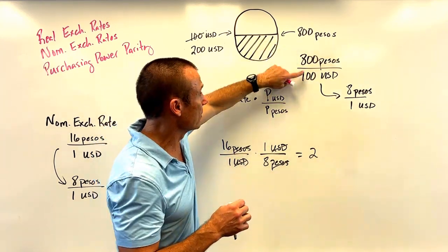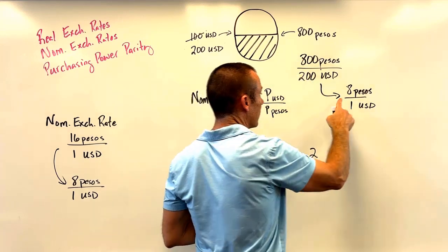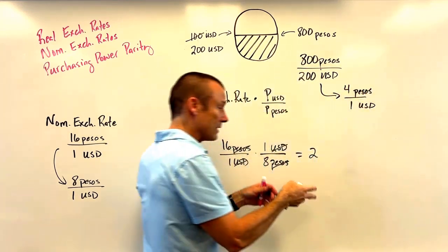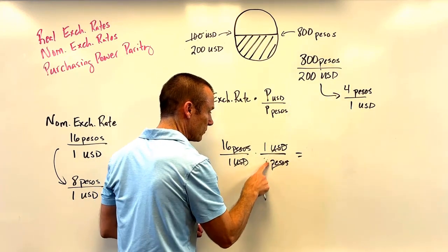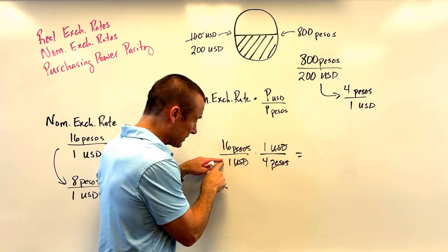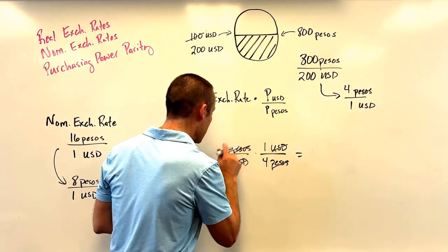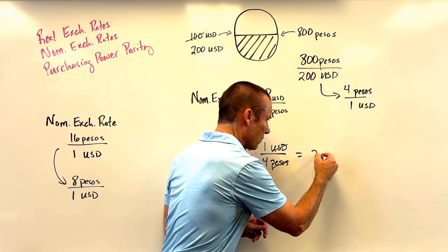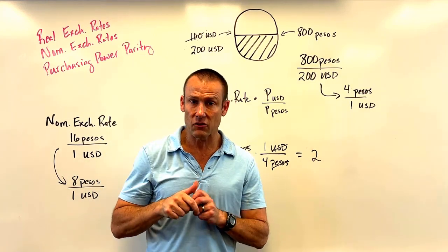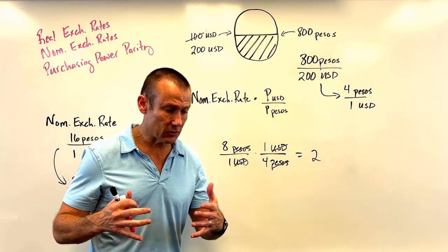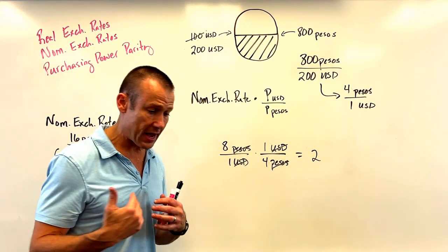With the US price level doubling to 200 USD and Mexico's staying at 800 pesos, the new PPP rate is 800 over 200, which simplifies to 4 pesos per USD. The new nominal rate is 8 pesos per USD. So the real exchange rate is now: 8 pesos per USD times 1 USD per 4 pesos = 8 divided by 4 = 2. The real exchange rate didn't change.